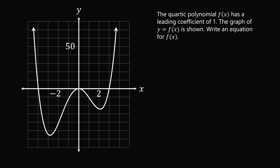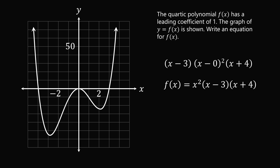Now let's solve Question 2. We have a quartic polynomial with leading coefficient 1. We identify three x-intercepts, meaning there's a double root somewhere. At x equals 3, we get factor x minus 3. At x equals 0, the graph bounces off, so we have a double root: (x minus 0) squared. At x equals negative 4, we get factor x plus 4. Since the leading coefficient is 1, f of x equals x squared times (x minus 3) times (x plus 4).